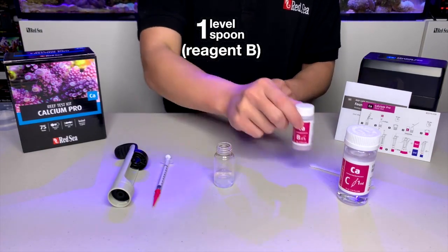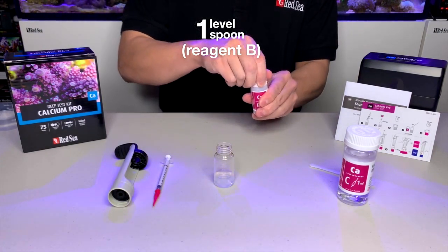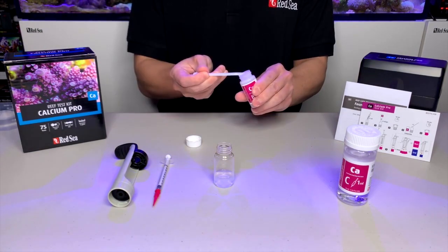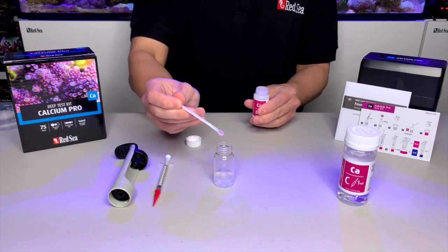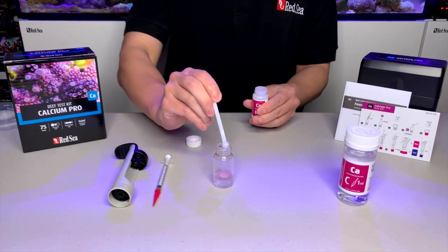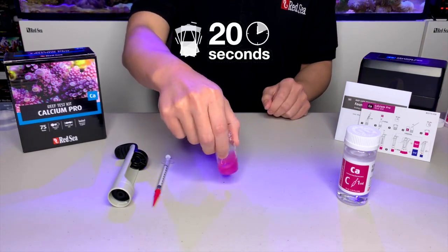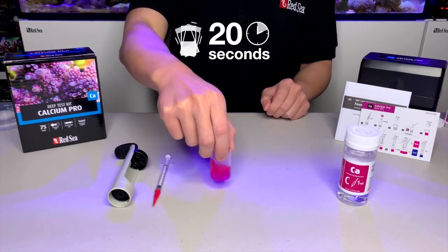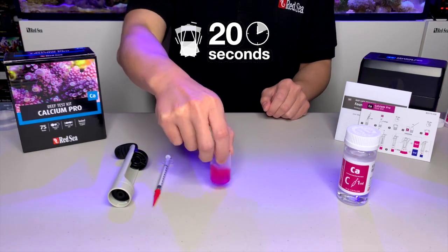Next, add 1 level scoop of reagent B into the vial using the plastic spoon provided in the box. Then we shake the vial gently for 20 seconds. Sometimes reagent B may create clumps that is ok and will not affect the result.